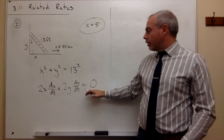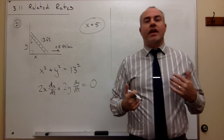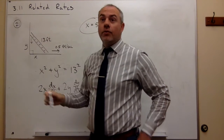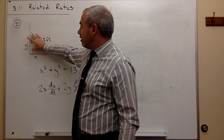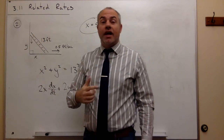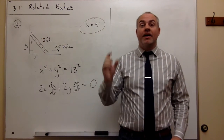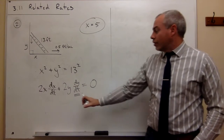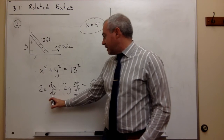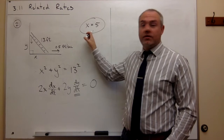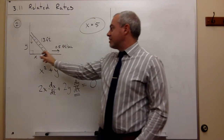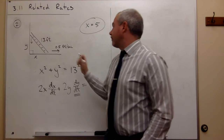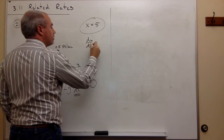At this point I should always ask: what am I trying to find? I want to know how fast the top of the ladder is sliding down the wall — in other words, at what rate is y changing. That's dy/dt, which is sitting right in our equation. To solve for dy/dt, I need to know x, dx/dt, and y. I know x is 5, and dx/dt is 0.5 feet per second.